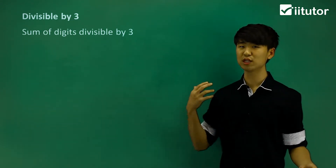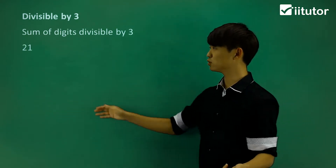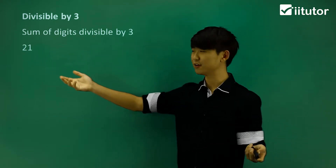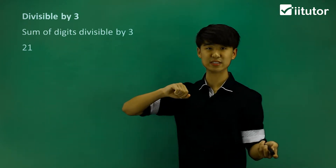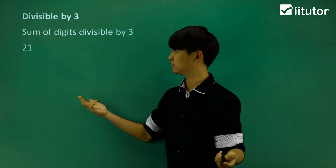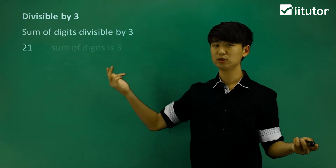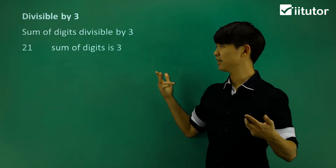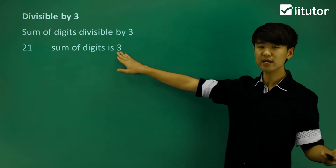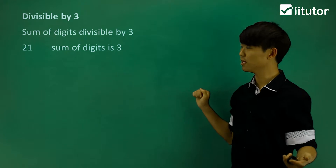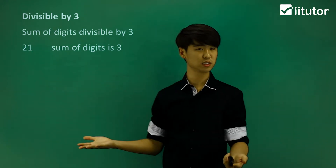We'll take a look at some examples so that we make sure we understand. So for example, 21 — which hopefully we already know is divisible by 3 — let's take a look at the sum of its digits. So the sum of its digits, what I mean is literally 2 plus 1. The sum of digits is 3. Since the sum of the digits is 3, and that is divisible by 3, then that means the number 21 is also divisible by 3.